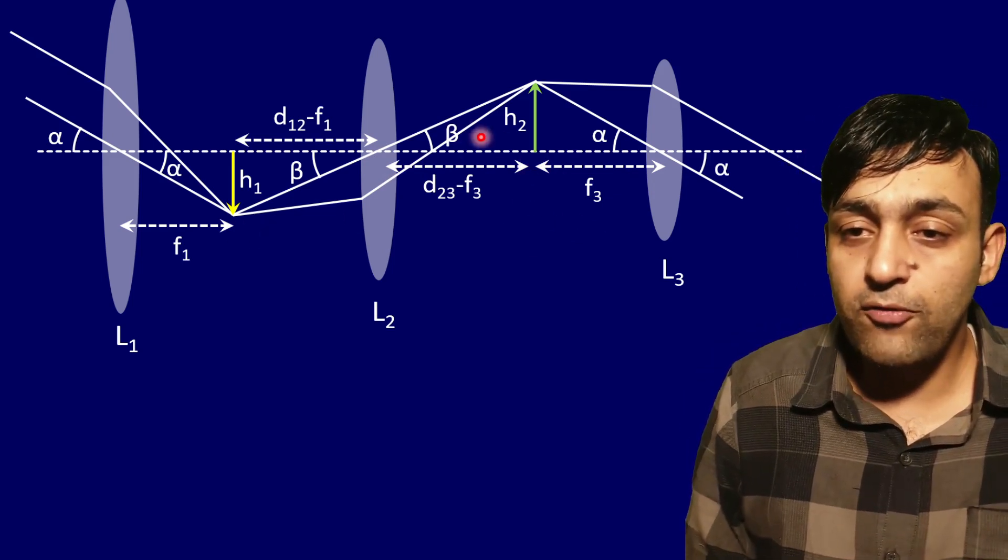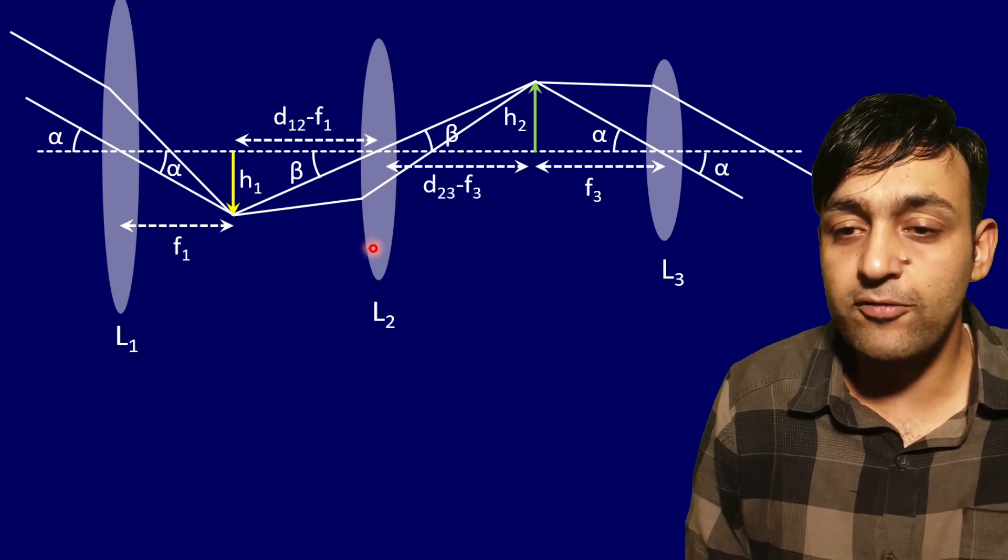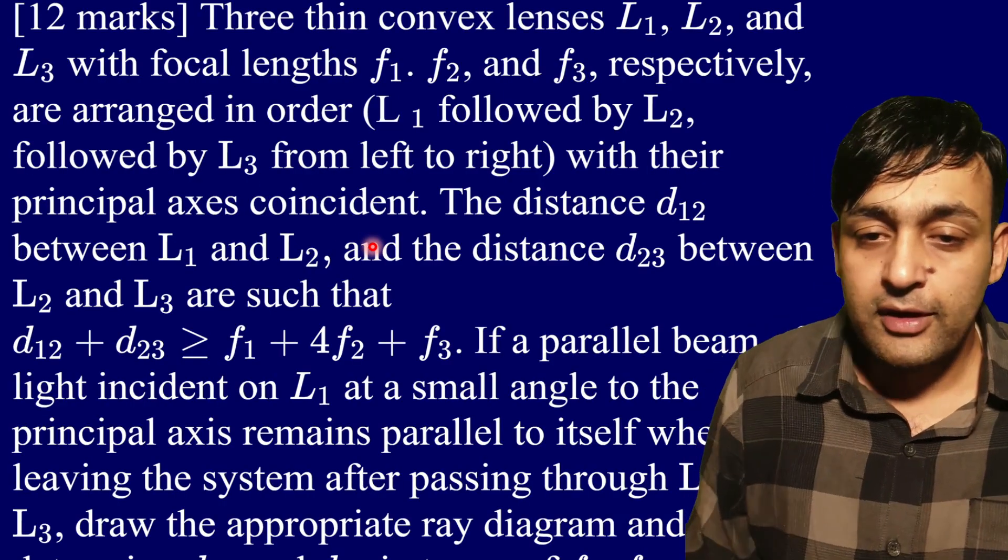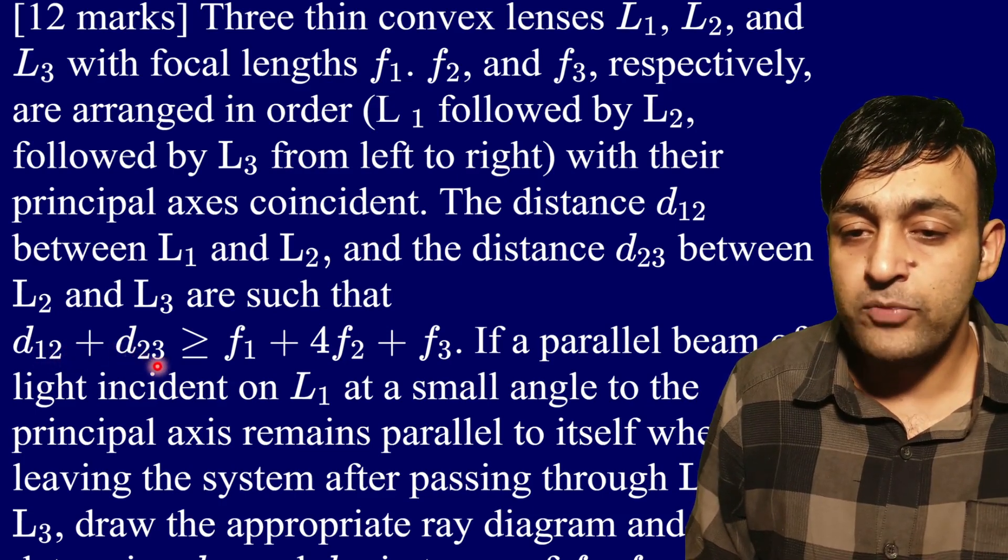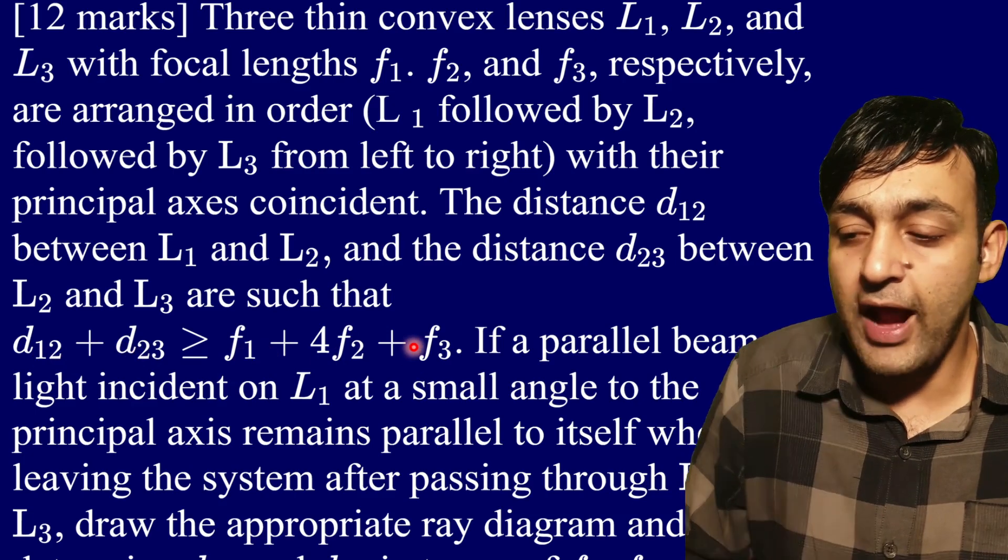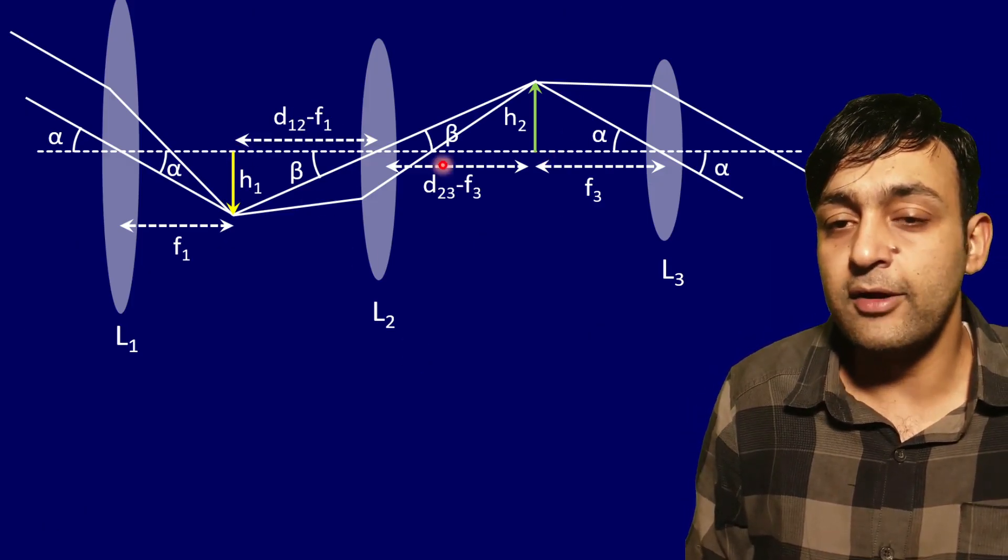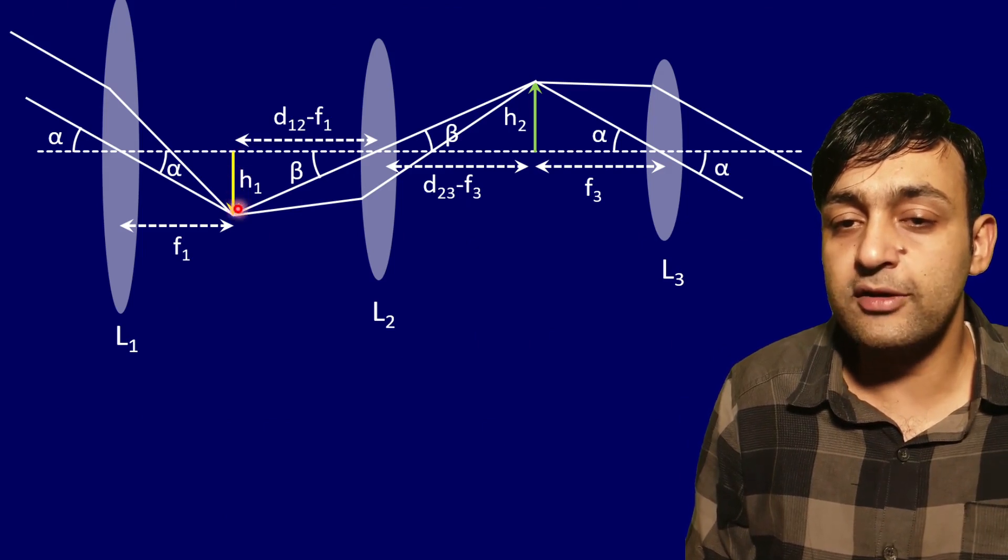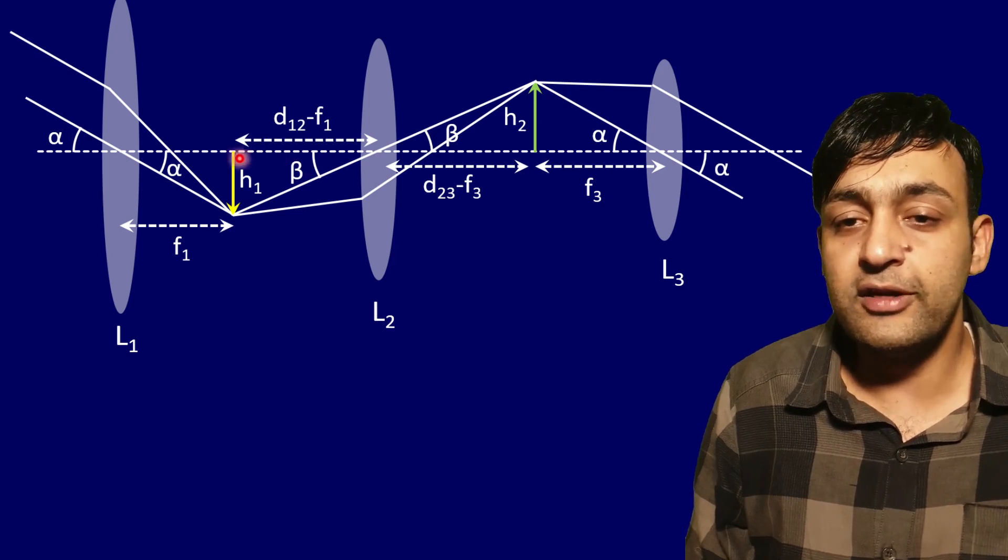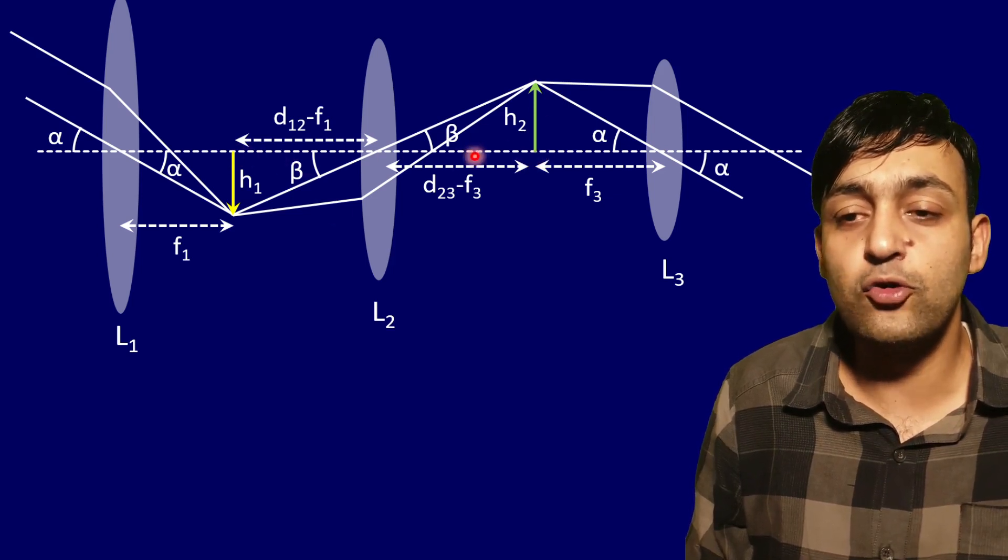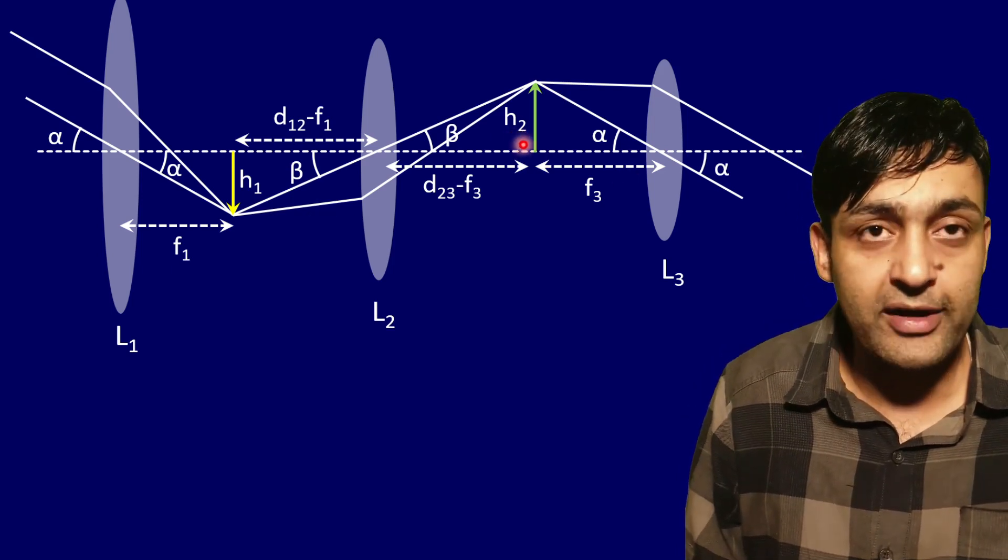Now for this lens 2, what was the meaning of the inequality we had? If we take d12 plus d23 and subtract f1 and f3, we get the distance from here to here - the distance between the object and image for lens L2. The distance between object and image should be greater than 4f, otherwise there will be no real image formed. This is given in the inequality part.